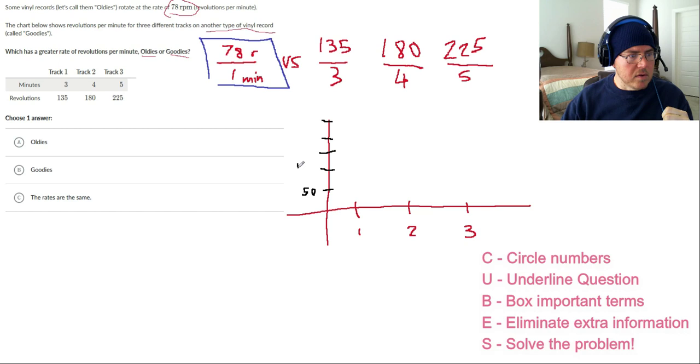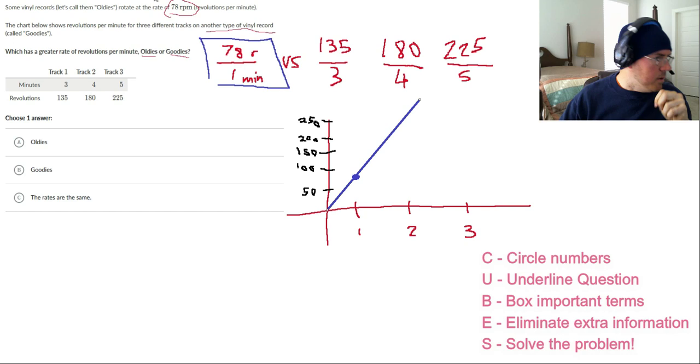So if this was 50, this was 100, and this is 150, and this is 200, and this is 250. So our oldies track, one minute, maybe somewhere right in here. Something like that. So there's oldies right there.